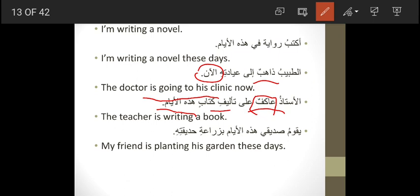يقوم صديقي هذه الأيام بزراعة حديقته — يقوم بزراعة means يزرع, just as يقوم بكتابة means يكتب. Don't translate يقوم and زراعة separately — يقوم بزراعة together means 'to plant'. So: my friend is planting his garden these days.